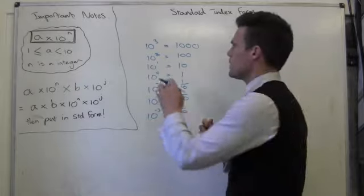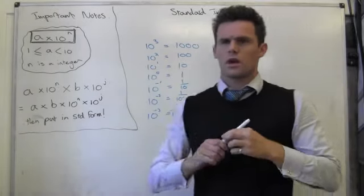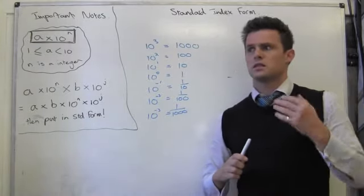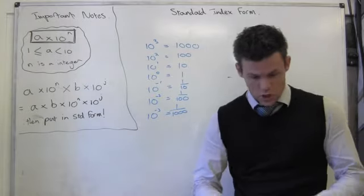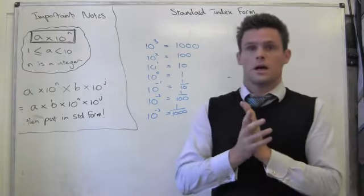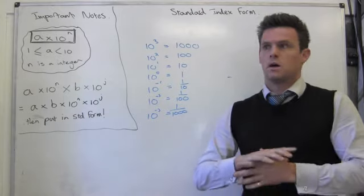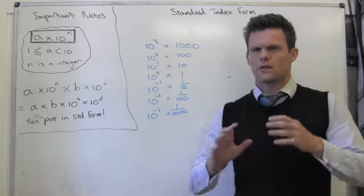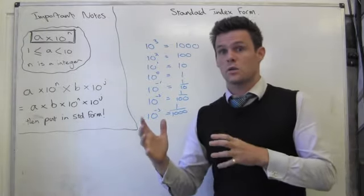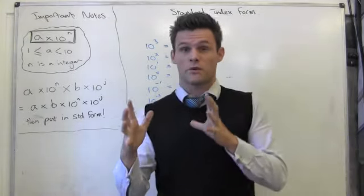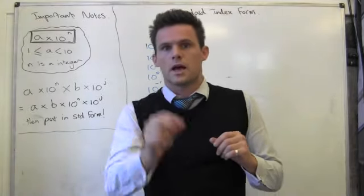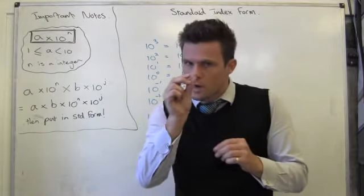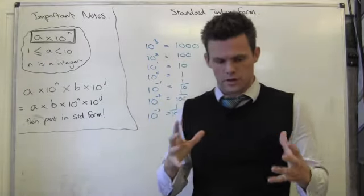The reason we actually work with index form is because in life we don't deal with small numbers very often. Science in particular deals with huge numbers — for example, the number of atoms in the universe, the number of cells in the human body. These are vast, vast numbers. And likewise within the same subject you have incredibly small numbers — for example, the diameter of a proton could be an incredibly small number.